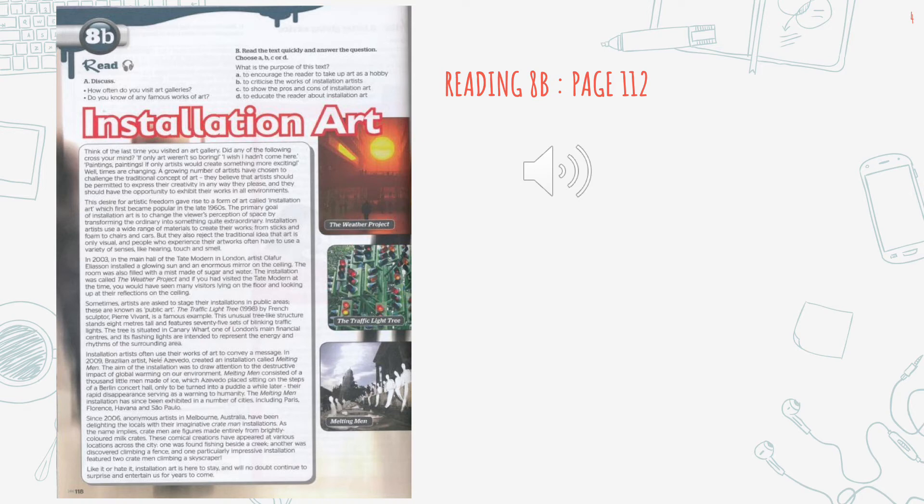Sometimes artists are asked to stage their installations in public areas — these are known as public art. The Traffic Light Tree, created in 1998 by French sculptor Pierre Vivant, is a famous example. This unusual tree-like structure stands eight meters tall and features 75 sets of blinking traffic lights.